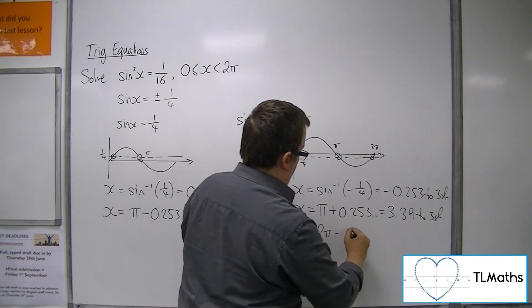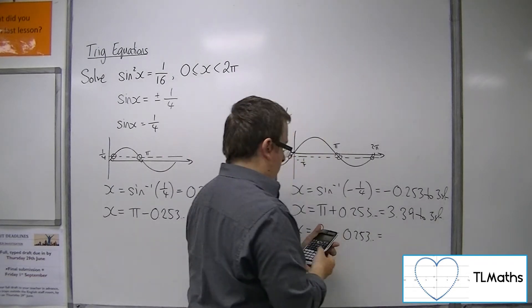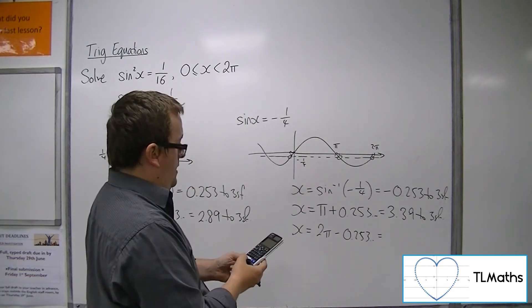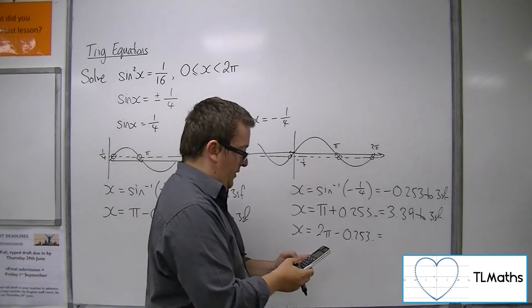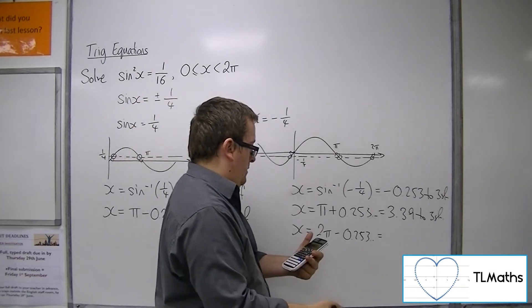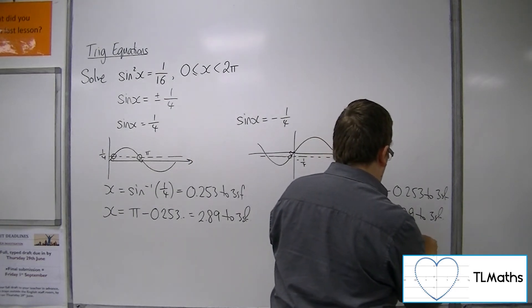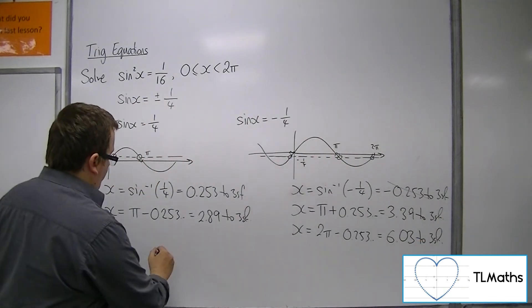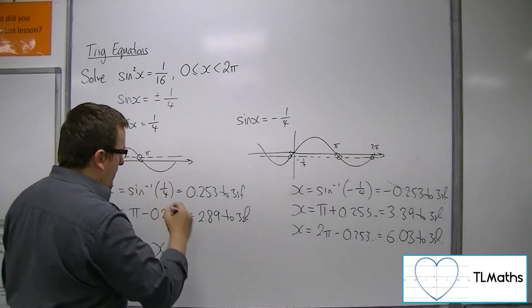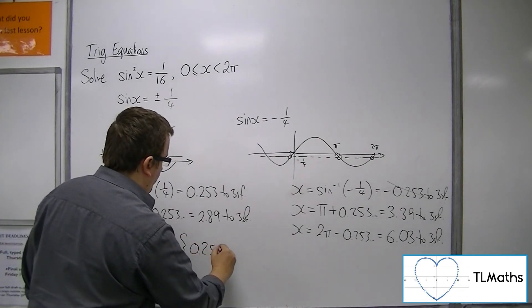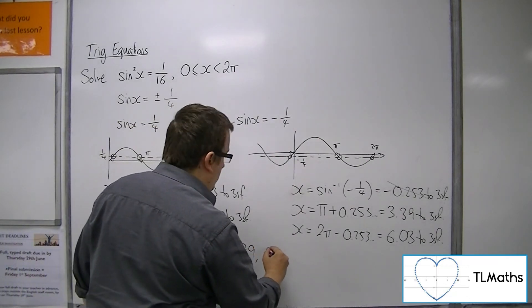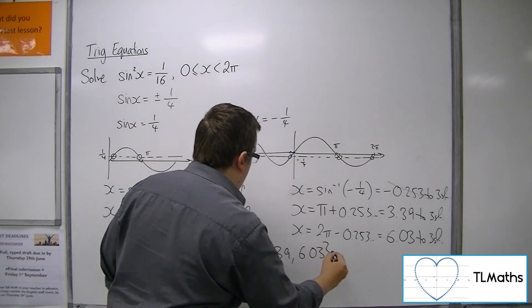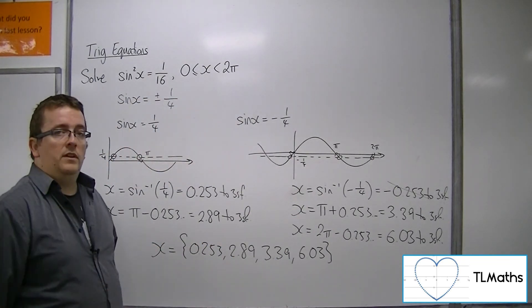And then 2π take away 0.253. 2 times π plus inverse sine of -1/4 is 6.03 to 3 significant figures. So that one can be ignored, and the four solutions to the original problem are 0.253, 2.89, 3.39, and 6.03 radians to 3 significant figures.